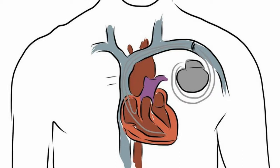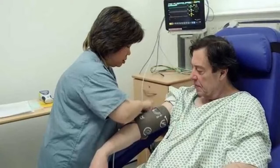There are two paddle placements. In the anterolateral placement method, one paddle goes just right of the sternum on the upper chest, while the other goes on the mid-axillary line at the cardiac apex level. In the anteroposterior paddle placement method, the two paddles go on the front and the back of the chest.